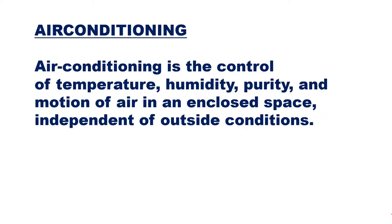Air conditioning is the control of temperature, humidity, purity, and motion of air in an enclosed space, independent of outside conditions. So let the outside temperature be anything, but where you have placed the air conditioning unit, it should control the temperature, humidity, purity, and motion. It mainly makes the room cool — that enclosed space will become cool even if the outside conditions are hot.